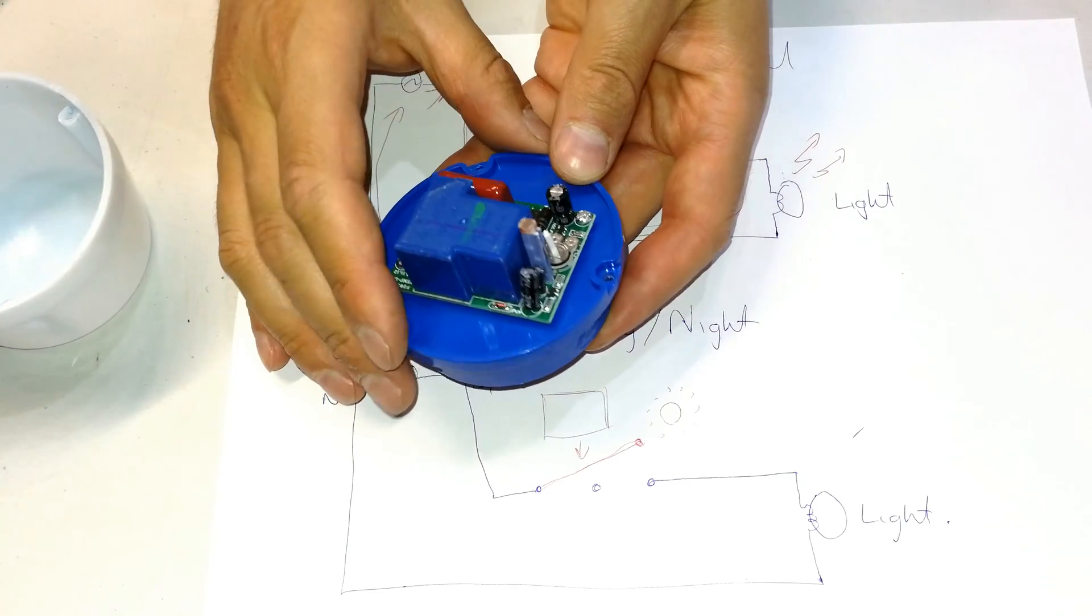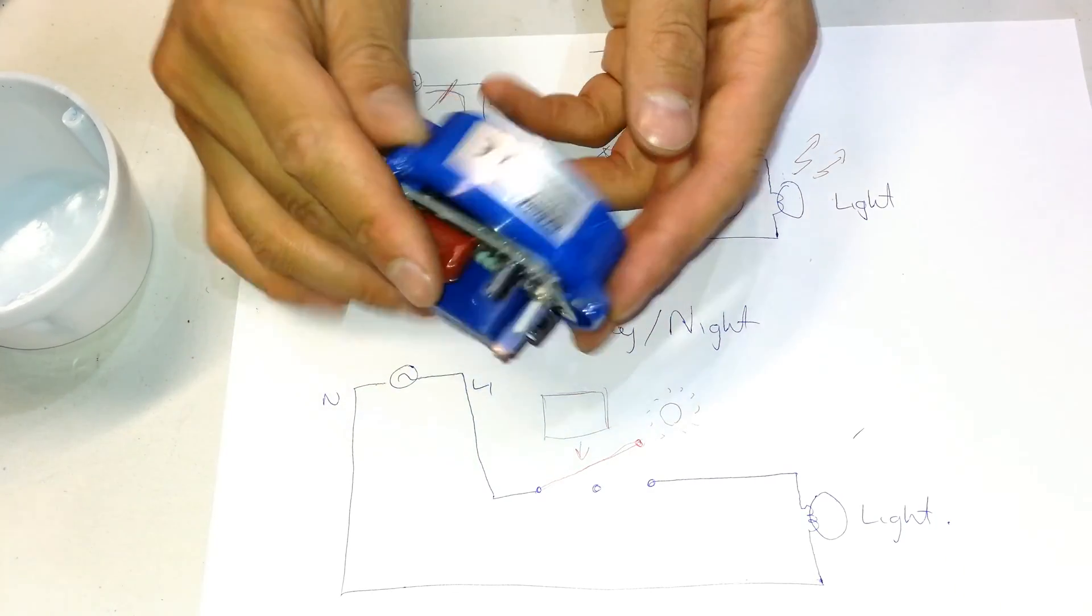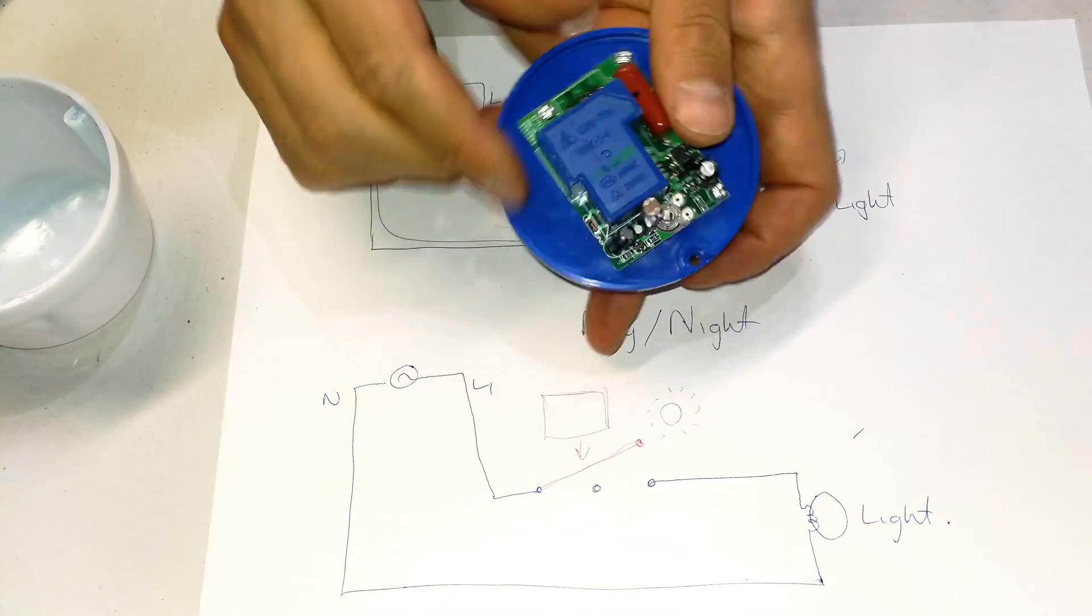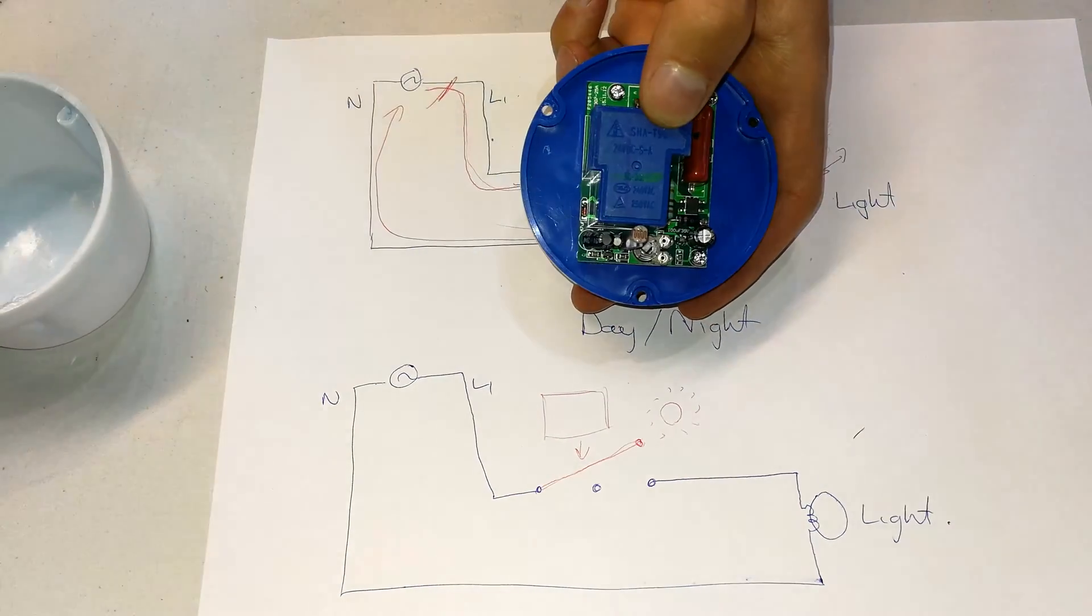Right, so I've opened it up, and now you can see what is inside of a day-night switch. That's this—the relay. The relay is a switch.